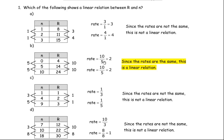So B is the only one that has the same rates in each case, so that's the linear relation. The correct answer for question number 1 would be B.